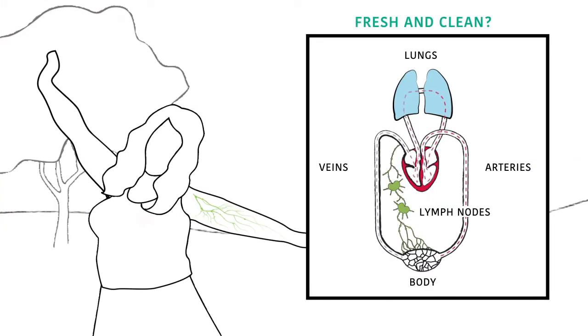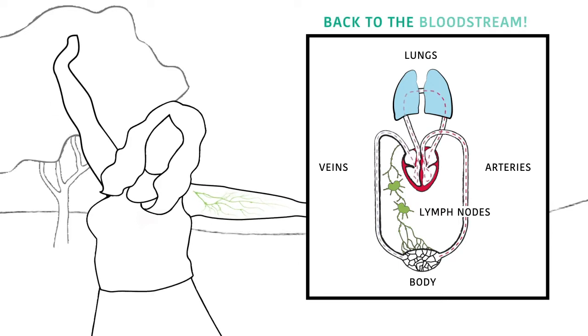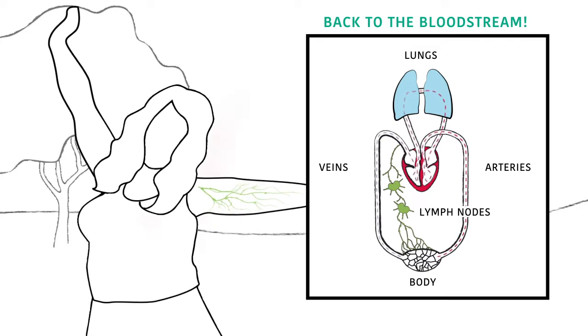Lymph fluid enters the bloodstream at the top of the body where pressure is lowest. Then your bloodstream carries it back into your circulatory system, starting the whole process over again.